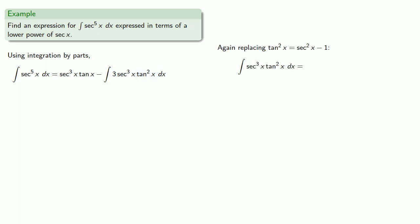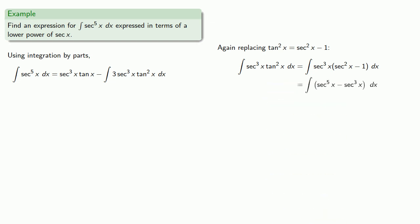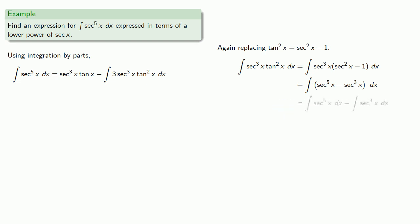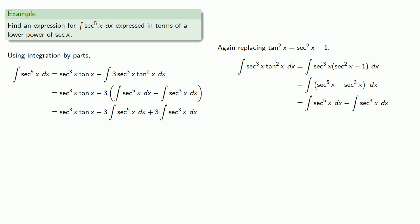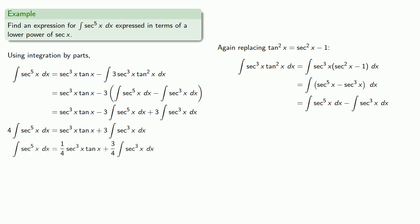Replacing, then expanding and splitting the integral apart, and doing a little bit of algebra, we can solve for secant to the fifth and get our reduction formula.